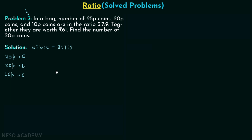This ratio does not include the common factor, and we need to find B — the number of 20 paise coins — so we must include the common factor. Let us say the common factor is X. Therefore A:B:C = 3X:7X:9X.